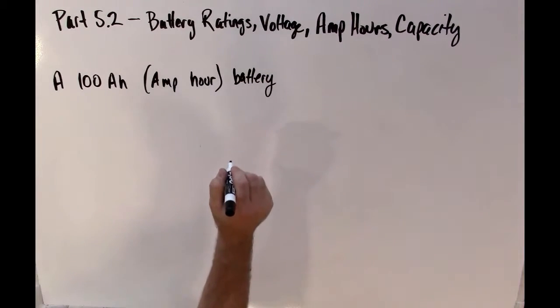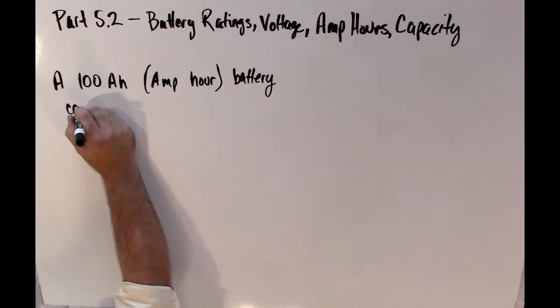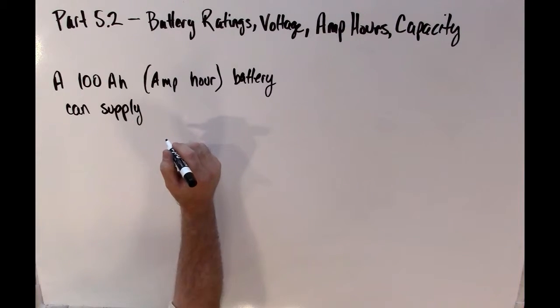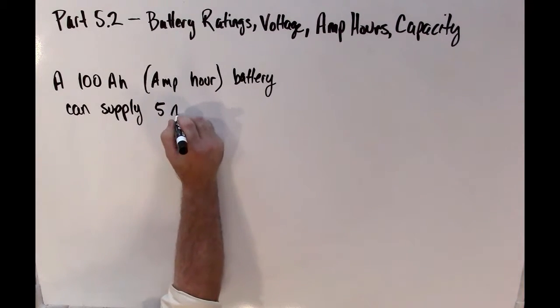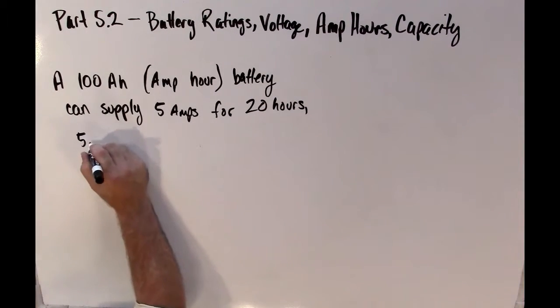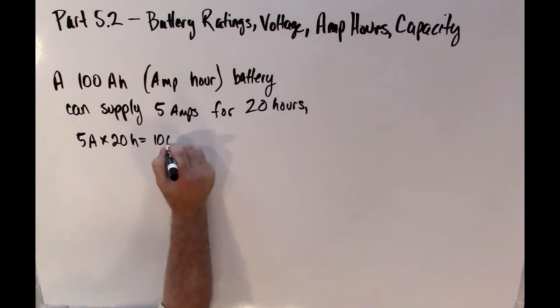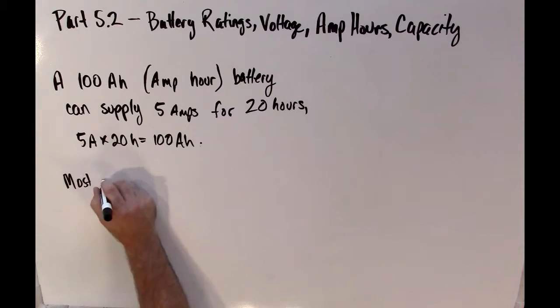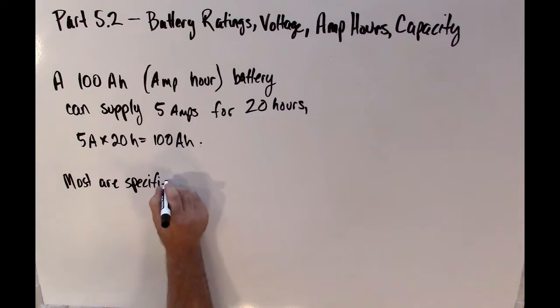A 100 amp hour battery stores a certain amount of charge, and that charge can be described as a product of amps, current, and time in hours. So for example, a battery that supplies 5 amps for 20 hours, or is capable of supplying 5 amps for 20 hours, is called a 100 amp hour battery.